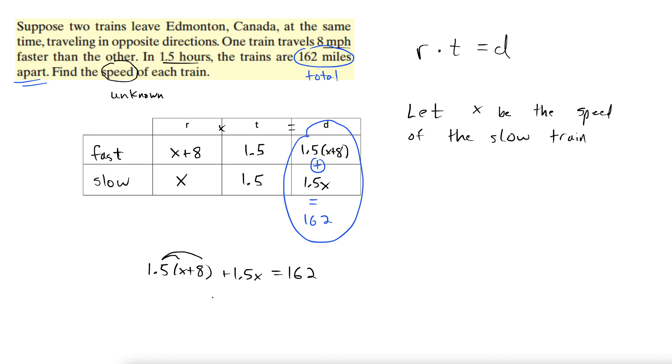We'll distribute this 1.5 through. We get 1.5x plus 1.5 times 8 is 12 plus 1.5x equals 162. Combine like terms here: 1.5 plus 1.5 is 3x. So that gives us 3x plus 12 equals 162. Subtract 12 from both sides: 3x equals 150. So x must be 50.